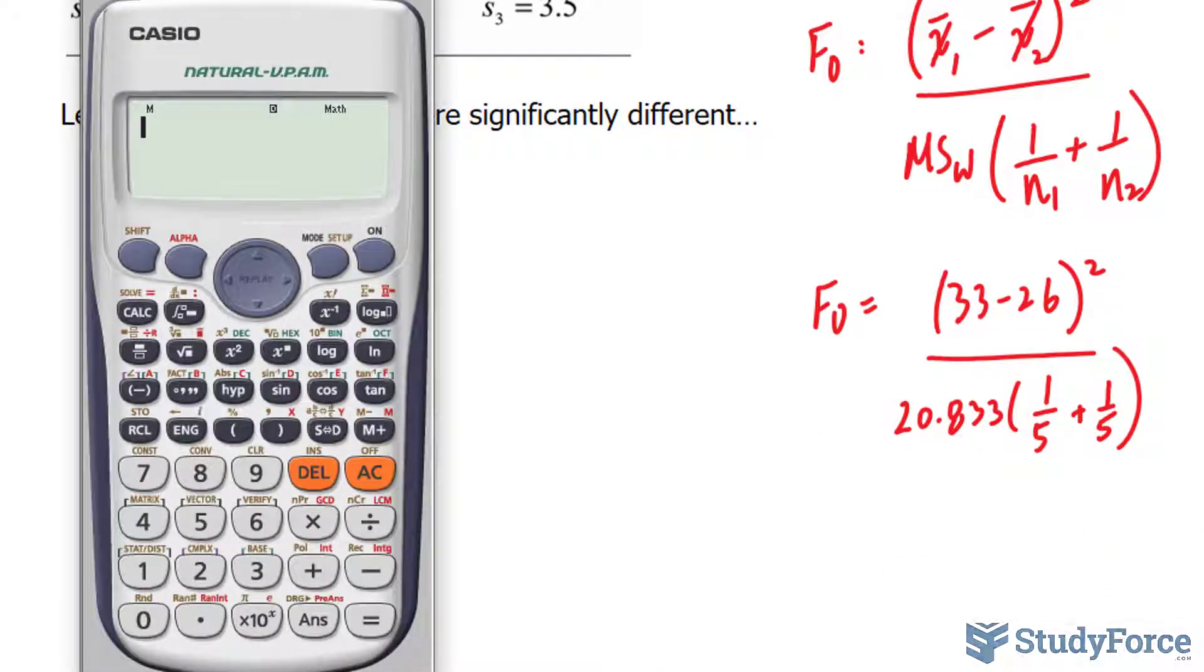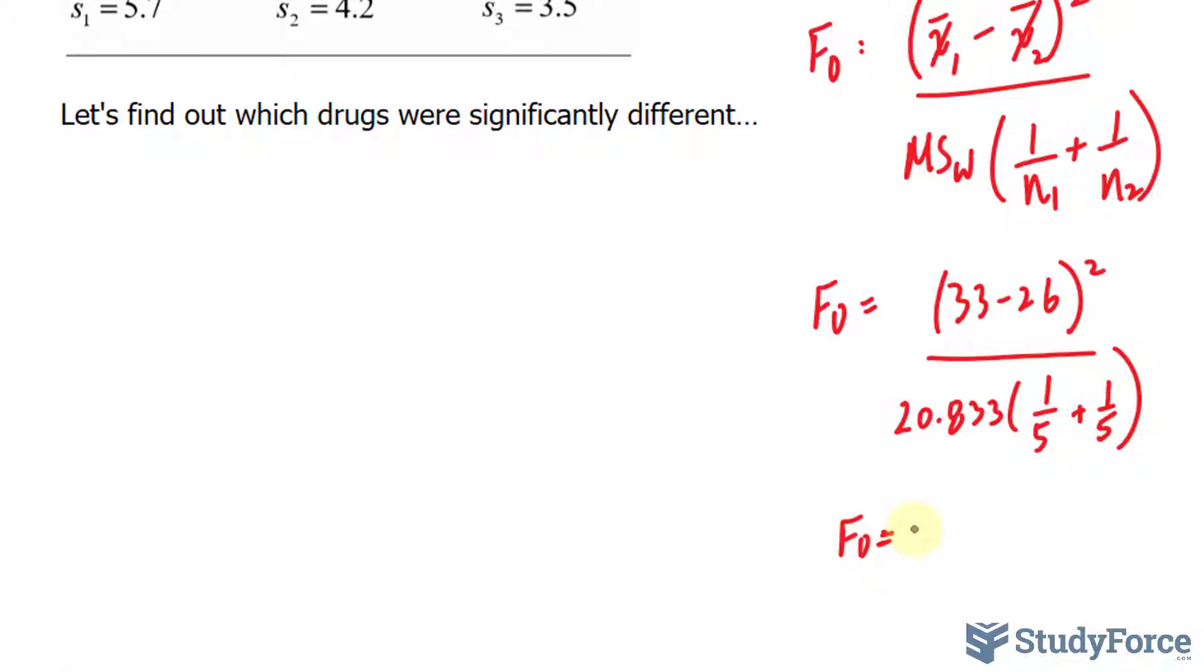Let's plug this into our calculator and see what we find. This gives us an F observed of 5.88.